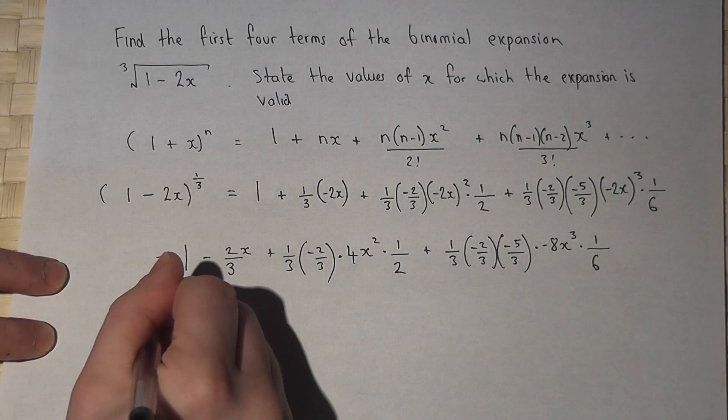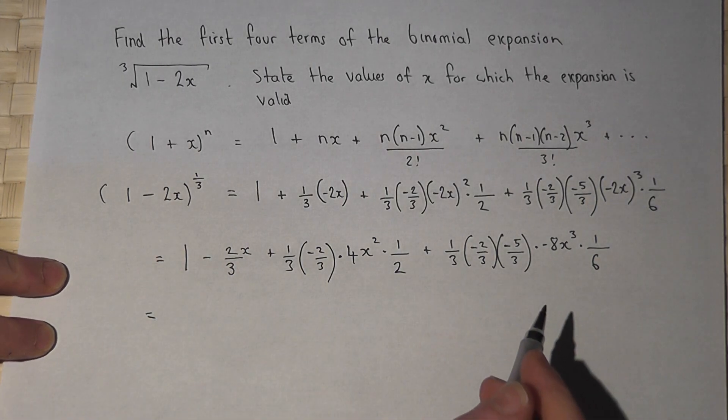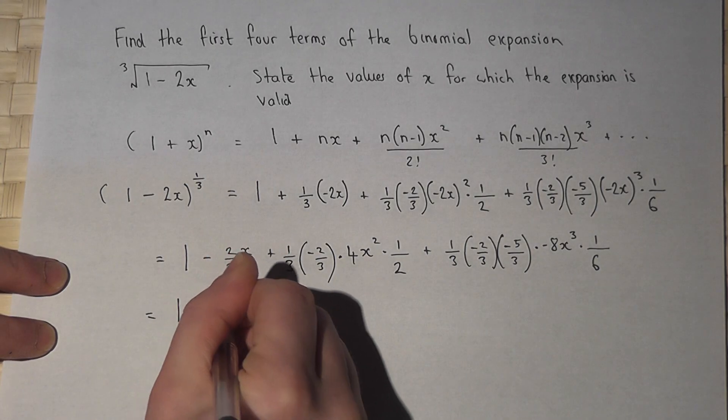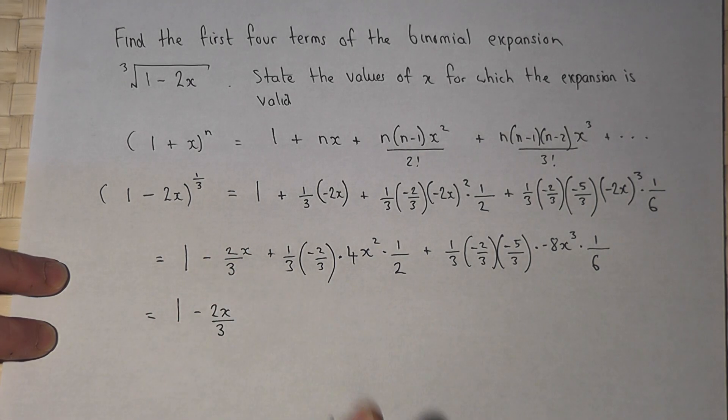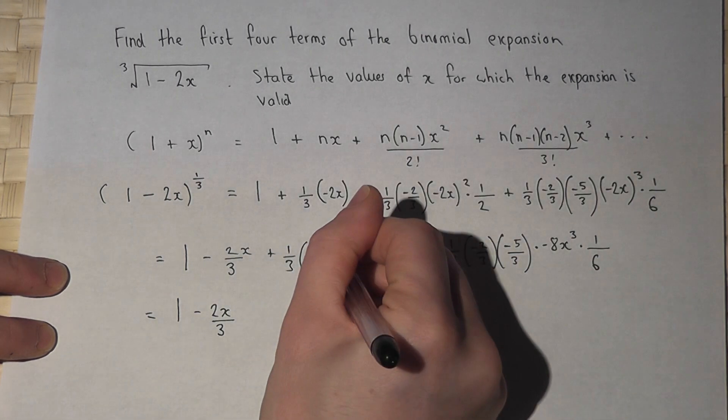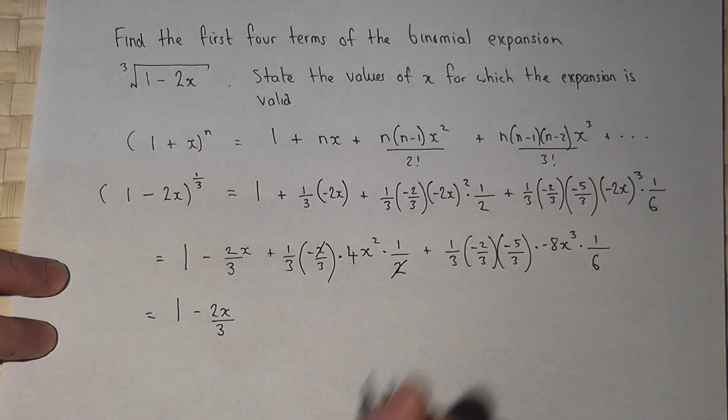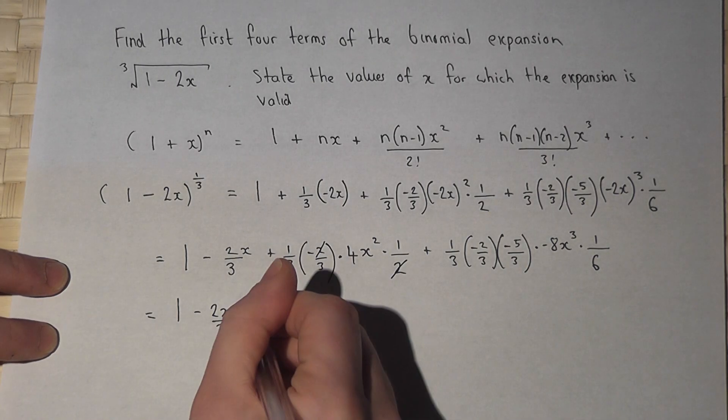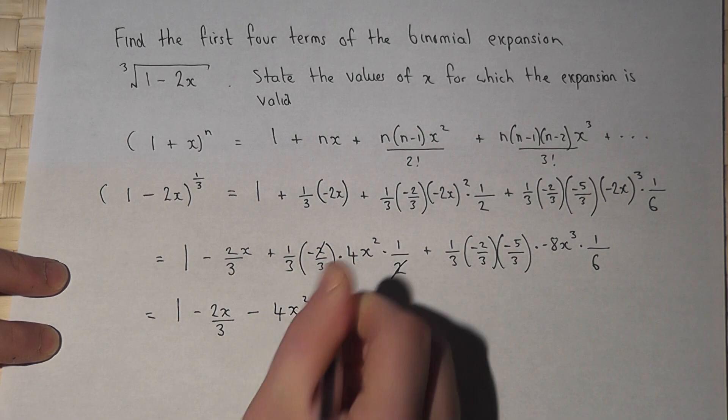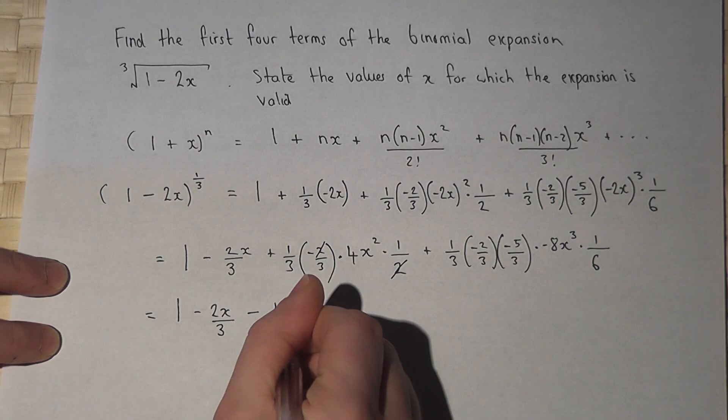So to finish off, I'll make it as simple as possible. So the first term doesn't change. Minus 2x over 3. Right then. The 2 here and the 2 here can cancel off. So I've got 1 minus sign. I've got 4x squared. And 3 times 3 is 9.